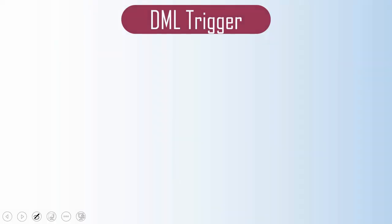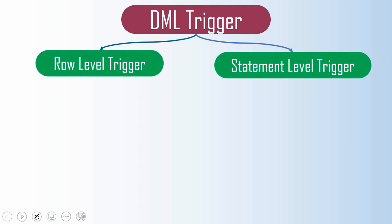DML triggers are the ones which get executed whenever we do a DML operation. At a high level, this trigger is broadly classified into two types: one is called a row level trigger, another is called a statement level trigger. The row level trigger fires for every row that is affected by the statement, whereas the statement level trigger fires just once for the statement being executed. For example, if you do an update affecting 5 records, the row level trigger fires 5 times whereas the statement level trigger fires just once.